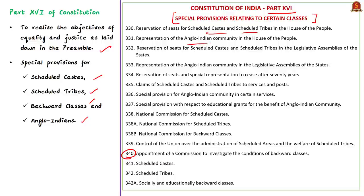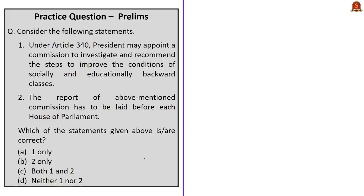Some of these special provisions are contained in Part 16, from Articles 330 to 342A, and they relate to reservation in legislatures, reservation in services and posts, educational grants, appointment of national commissions, and appointment of commissions of investigation. Under this, we have Article 340, which we discussed previously. To summarize, we saw about the commission appointed to examine sub-categorization of OBCs constituted under Article 340 — its terms of reference, purpose, and the news related to the approval of the extension of its term. Now, have a look at the practice question.